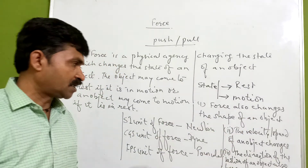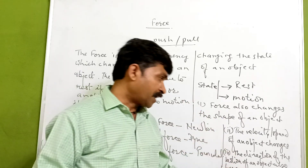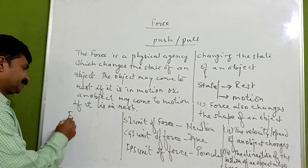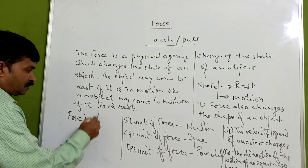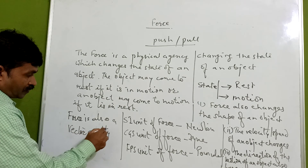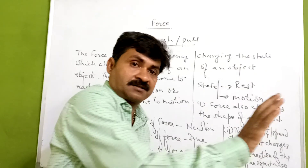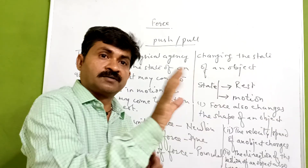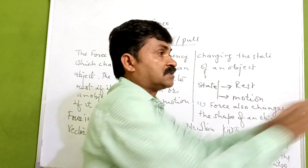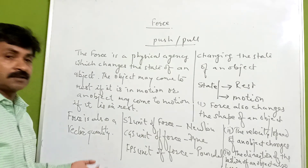So these are the points to keep in mind: force changes the shape of an object, the velocity or speed of an object changes — that is, there is a change in motion — and the direction of the motion of an object also changes. Force is also a vector quantity, meaning it has magnitude as well as direction. If you are applying a force in a certain direction, whatever magnitude you are applying, the displacement may take place in that direction. So force has both direction and magnitude — it is a vector quantity.